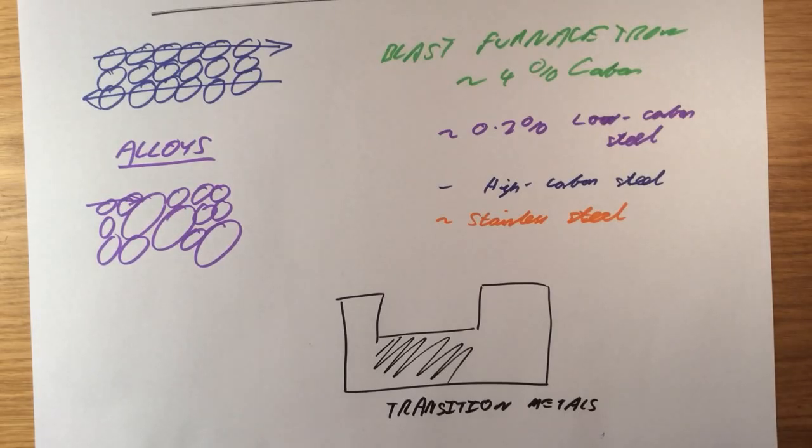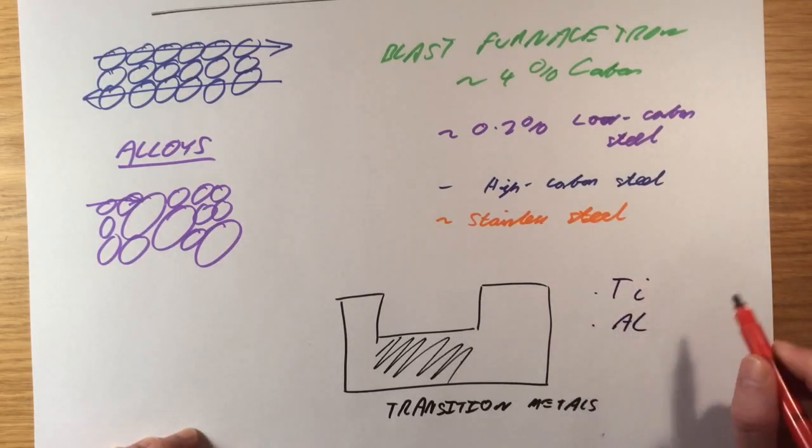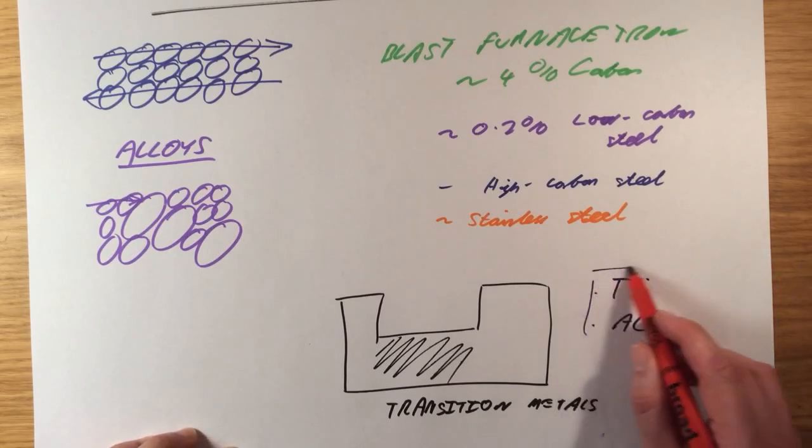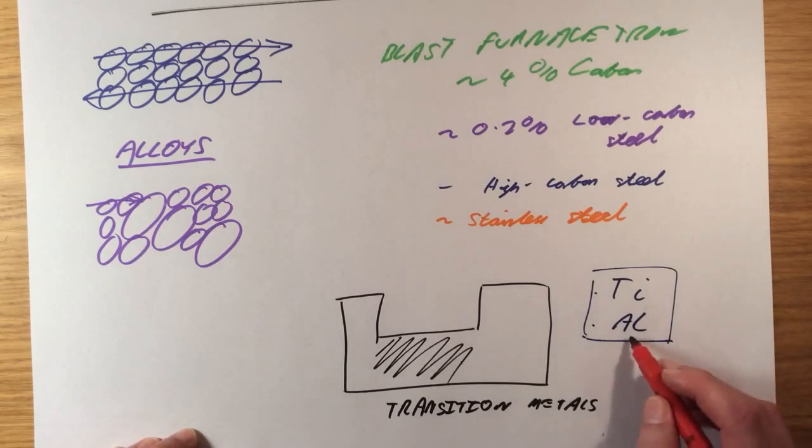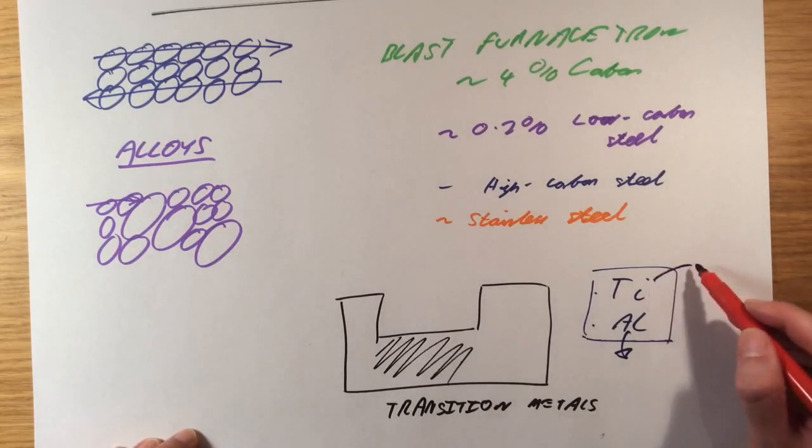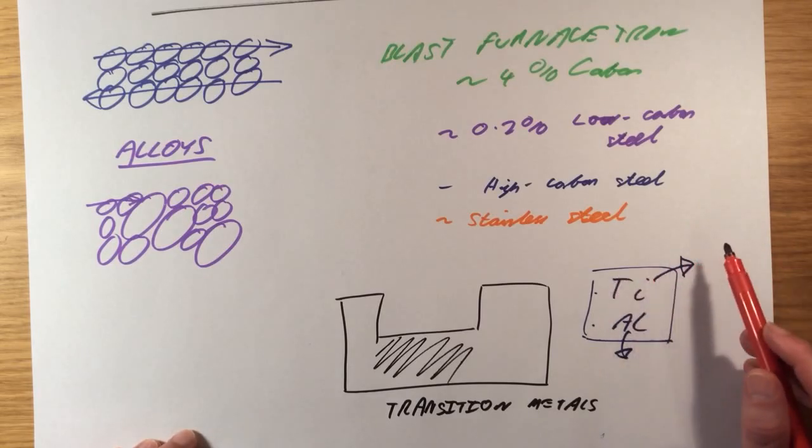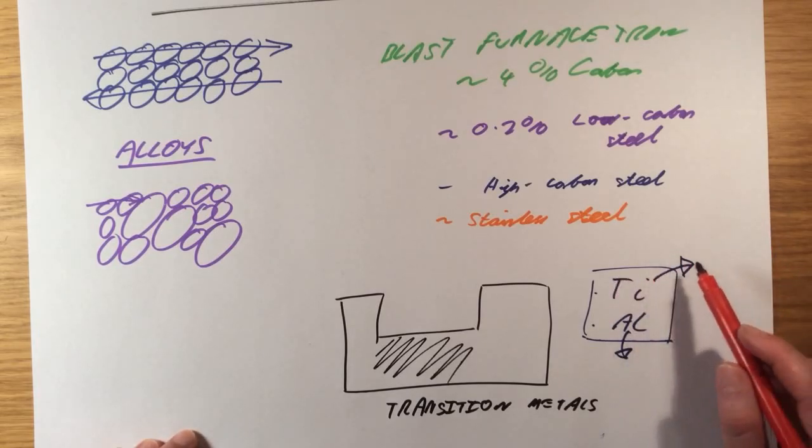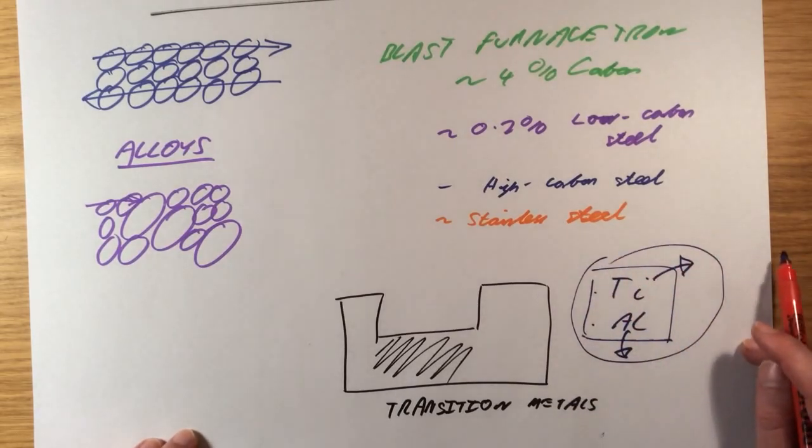Two metals which you are expected to know a little bit more about are titanium and aluminium. All the specification says is that you need to know that these two are extremely useful, but they cannot be extracted using reduction. Aluminium is too reactive. You have to use electrolysis to extract aluminium from its ore. And titanium should be able to be extracted by reduction. However, titanium itself reacts with carbon, which means it can't be extracted that way. So to extract these two, we have to use other methods which require more energy and are therefore more expensive.